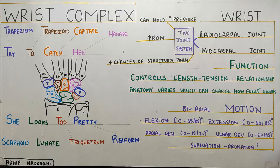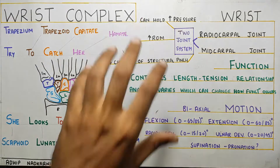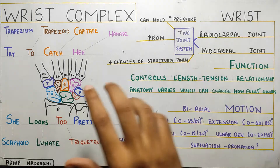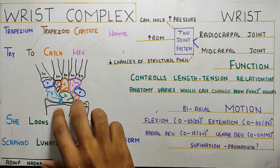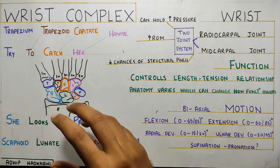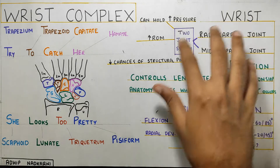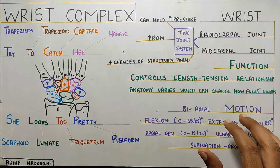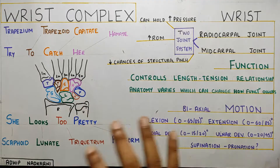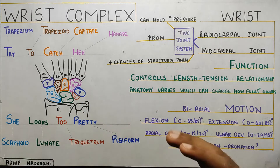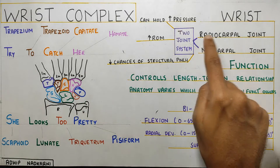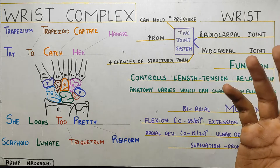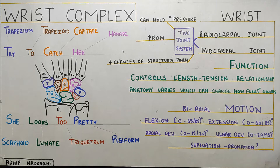In this video, we are going to talk about the wrist complex. This will be an introduction video. I will be talking about the bones that are present in your wrist joint, then we will go on to the articulation and the motion at the wrist joint. It will be a short video, and the next video we will go into detail of each joint — the radiocarpal and midcarpal joints.